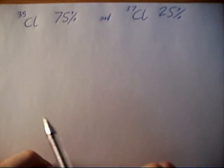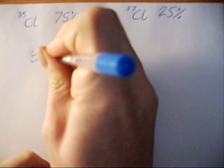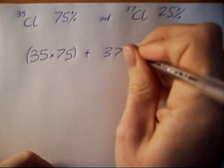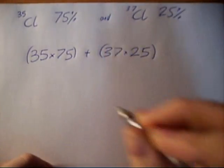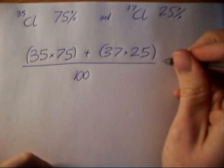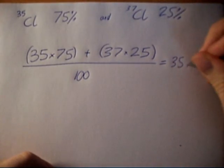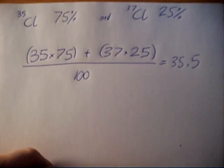To calculate the relative atomic mass, we do 35 times 75 and we add that to 37 times 25. We then divide by 100, which is the total of the two abundances. This gives an answer of 35.5, which is the value you commonly see on the periodic table.